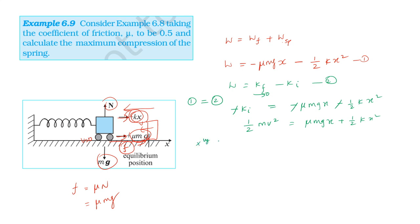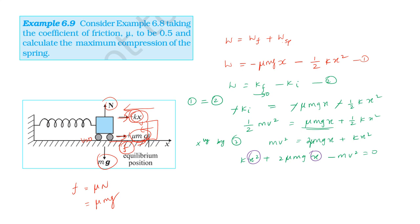Multiplying the equation by 2: m v squared equals 2 mu m g x plus k x squared. Rearranging, this gives a quadratic equation in x of the form ax squared plus bx plus c equals zero, where the coefficient of x squared involves k and the coefficient of x involves 2 mu mg. The quadratic formula gives x equals minus b plus or minus root of b squared minus 4ac, divided by 2a.